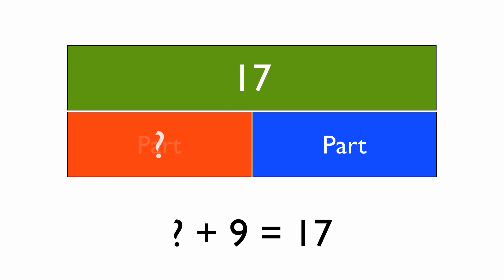And we know the two parts: question mark and 9. Again, we want to solve it so that the question mark is at the end. So we have to rearrange it. We turn it from an addition problem into a subtraction problem, a take away.